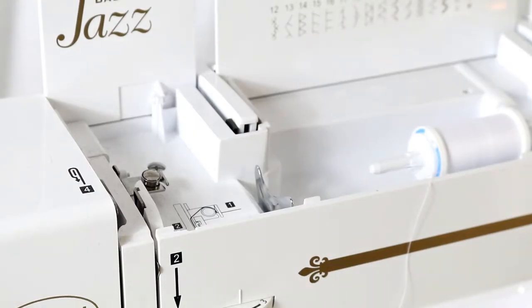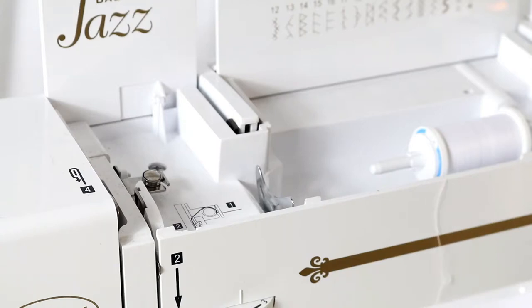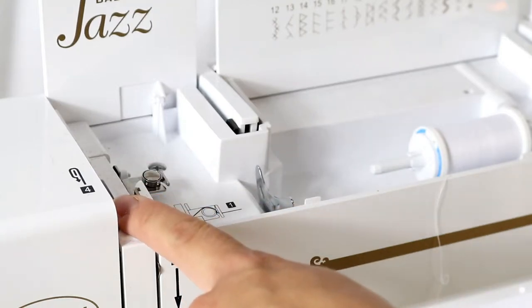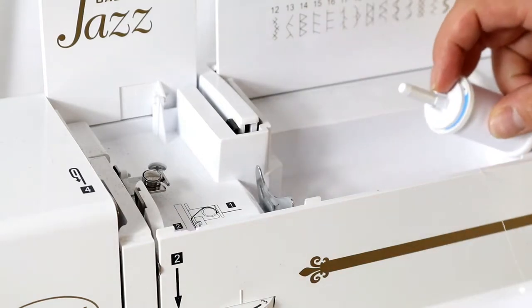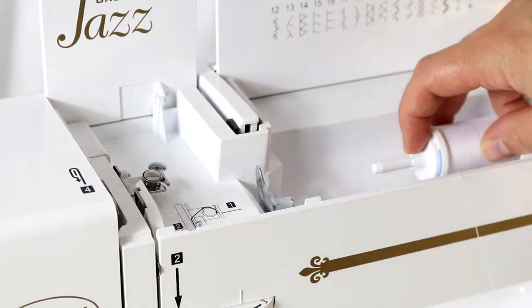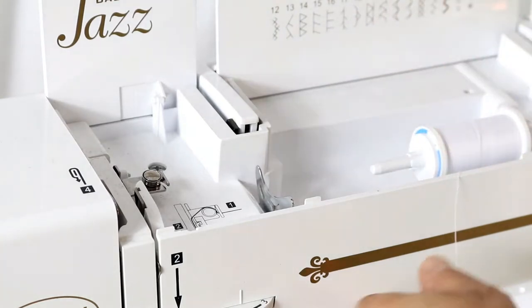So now we want to go ahead and thread the upper thread. So you want to make sure you have a raised presser foot. And make sure that your lever here is in the most upright position. So you're going to turn your hand wheel there. So you're going to secure your spool. Can we see this? Oh my goodness. You're going to secure your spool. Make sure it's on there good.